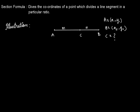Now let's have a look at the section formula. This formula gives the coordinates of a point which divides a line segment in a particular ratio. Take a look at the illustration: we have a line segment AB, and point C divides the line segment in the ratio m:n, so we are saying that AC/CB equals m/n.